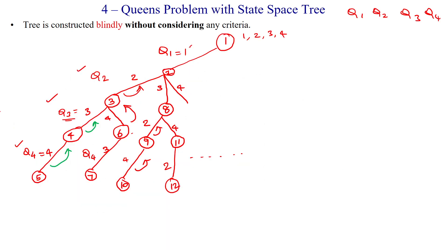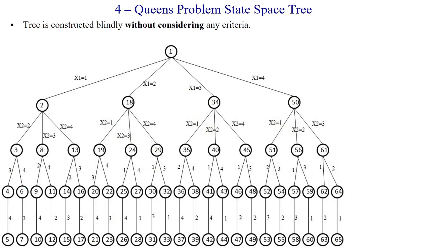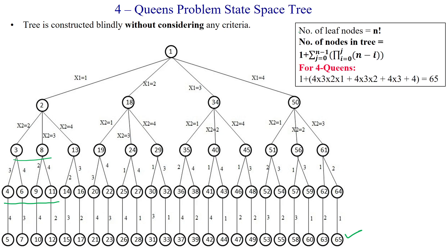When constructing like this, we get levels in the tree. The third level has nodes 3 and 8, and further nodes include 4, 6, 9, 11, and so on. We get a total of 24 leaf nodes, as confirmed by counting: 1, 2, 3, 4, 5, 6, 7, 8, 9, 10, 11, 12, 13, 14, 15, 16, 17, 18, 19, 20, 21, 22, 23, 24 — giving us 24 leaf nodes total.